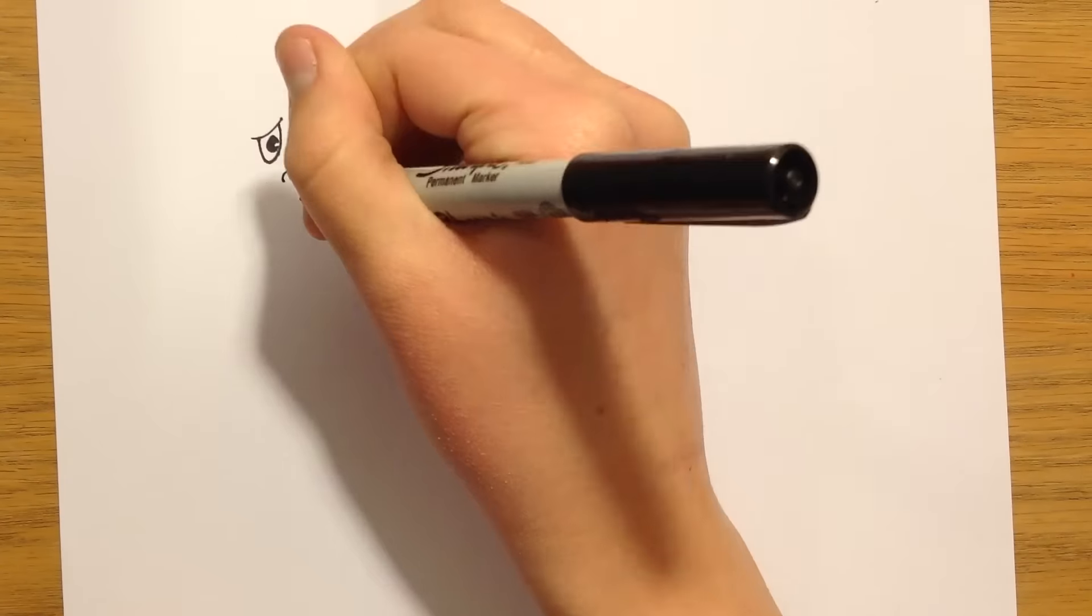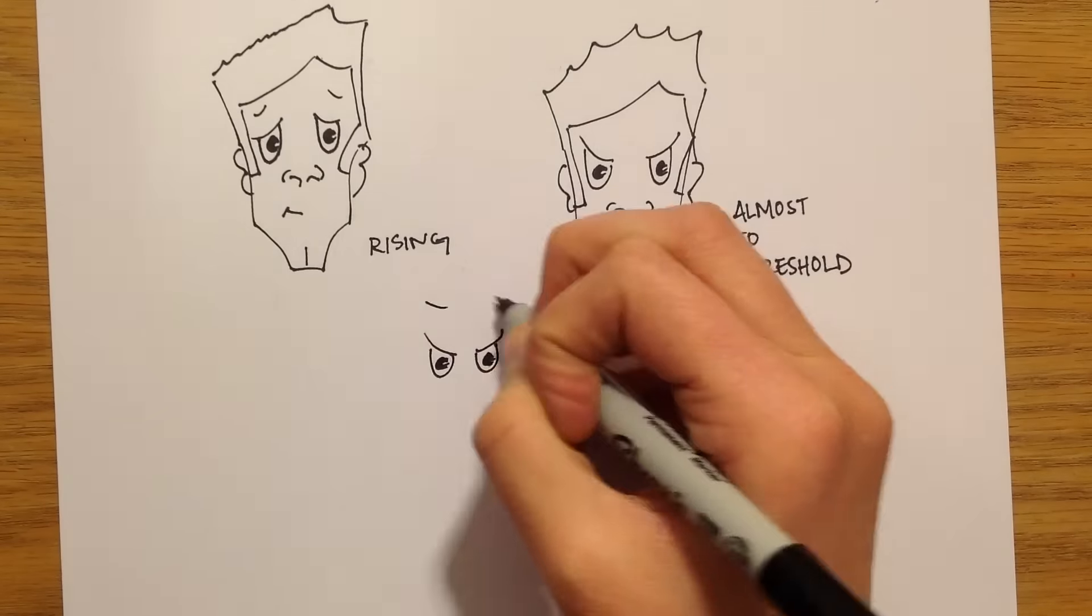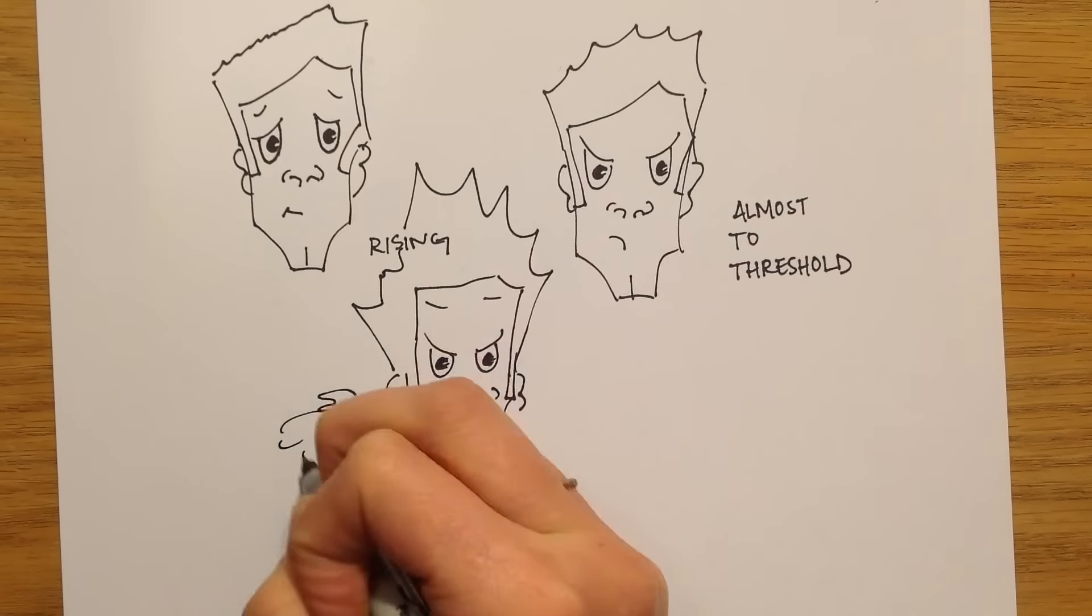At first it doesn't bother him that she's there, but he begins to feel his emotions rising. First irritated, then frustrated, and finally he snaps. He couldn't hold back his anger.